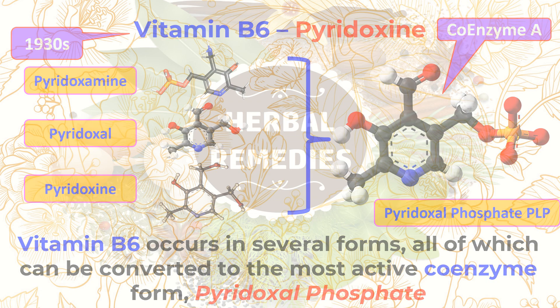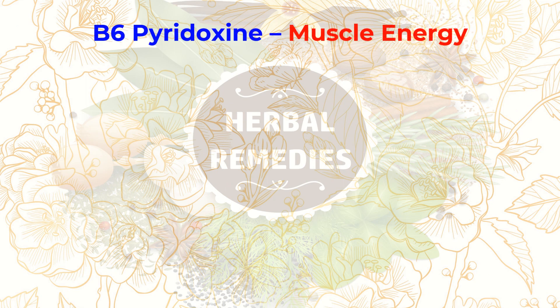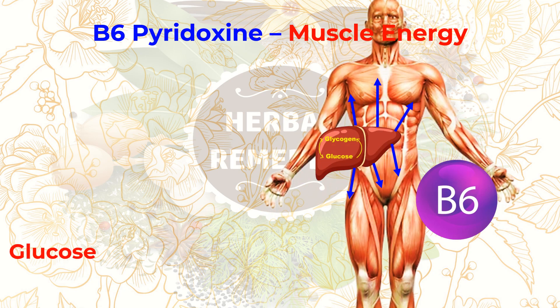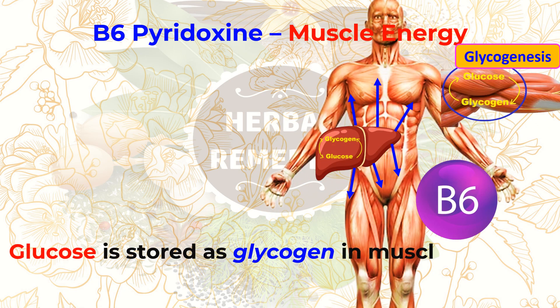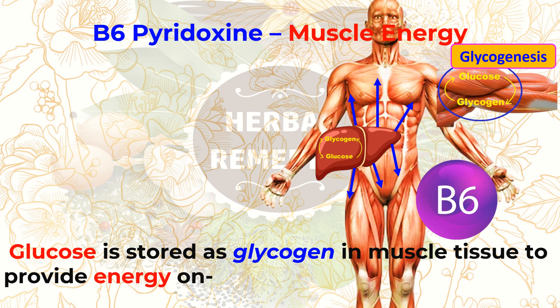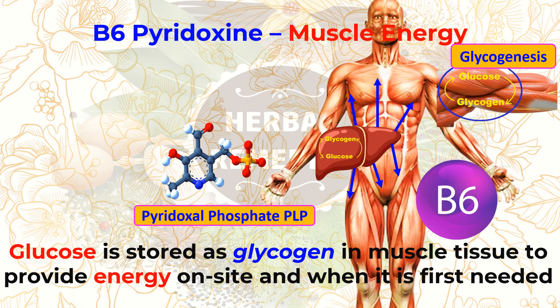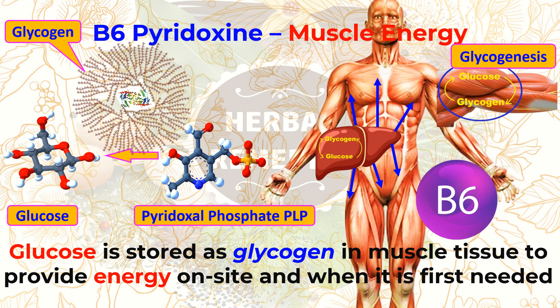Vitamin B6 is unusual as it is so extensively stored in muscle tissue. Glucose is stored as glycogen in muscle tissue to provide energy on site when it is first needed. PLP is a coenzyme to the enzyme glycogen phosphorylase, which catalyzes the release of glucose from glycogen.